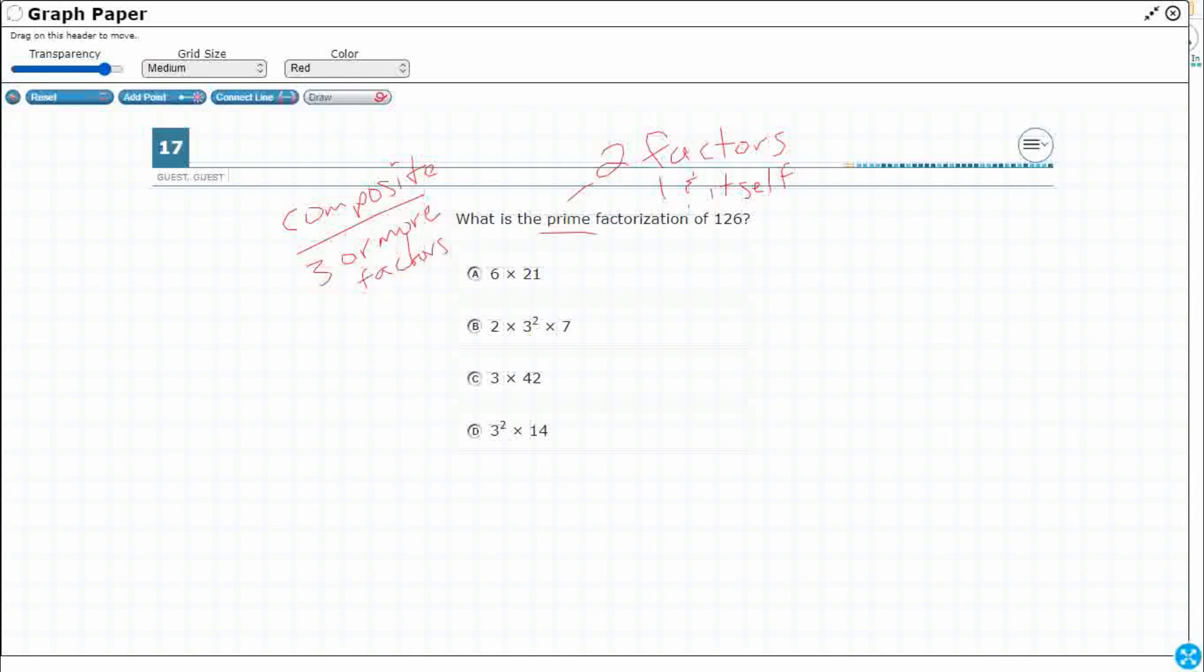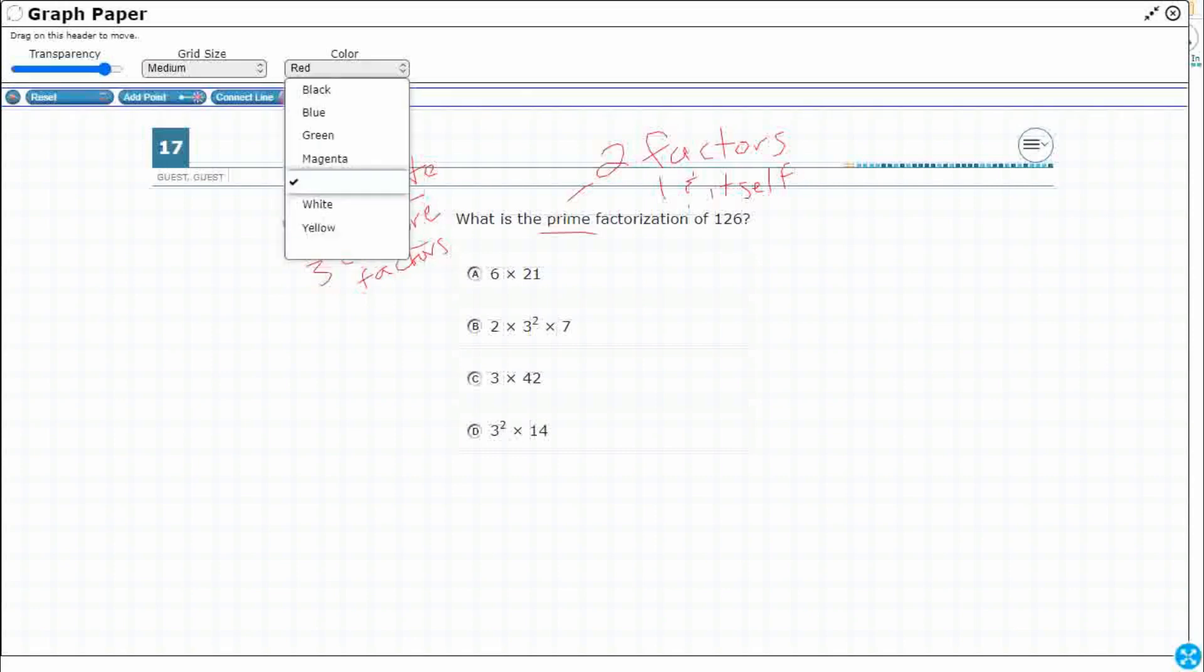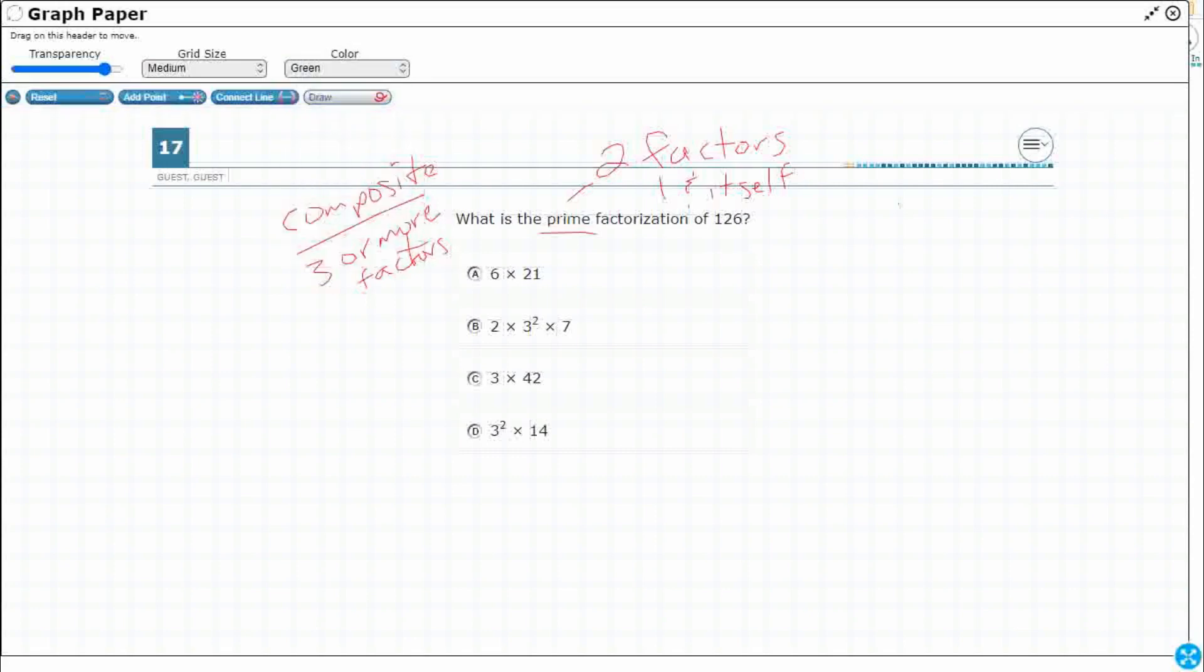All right, so what we're going to do is we're going to take our 126. I always view it as making a Christmas tree. So, I'll turn it green for my Christmas tree. What I'm going to do is I'm going to think, how can I multiply to get to 126? I'm just going to keep going until the only numbers I have left are going to be prime. So it's an even number, so I can do two times something. So two times 63.